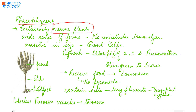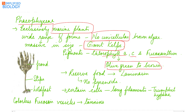Phaeophyceae, or brown algae, are exclusively marine plants. They occur in a wide range of forms; no unicellular form can be seen. Brown algae are massive in size and are generally referred to as giant kelps. The pigments present are chlorophyll a, c, and fucoxanthin. They are generally olive green to brown in color. The thallus of most brown algae has a stalk-like structure called the stipe, which is attached to rocks by a holdfast, and has an upper expanded leafy structure called the frond.